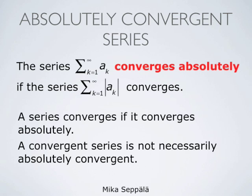To summarize: a series summation k from 1 to infinity of ak converges absolutely if the series formed by the absolute values of the terms ak converges. A series converges in the normal sense if it converges absolutely, but not the other way around — there are series that converge in the normal sense but do not converge absolutely. The alternating harmonic series is an example of such a situation.